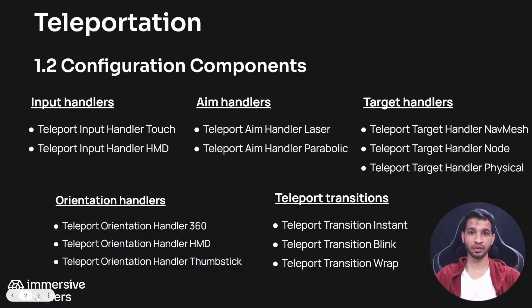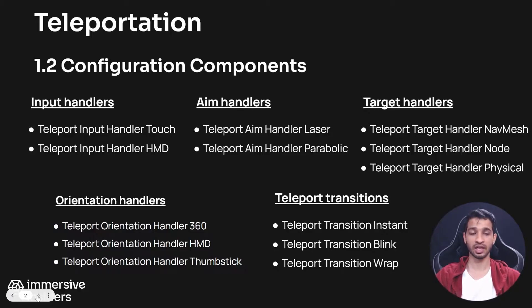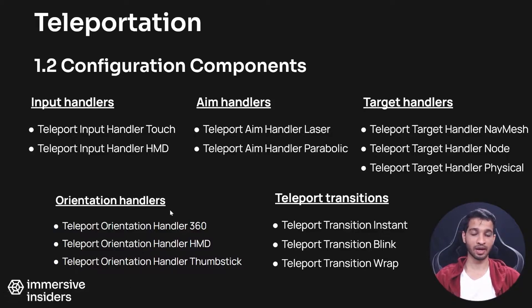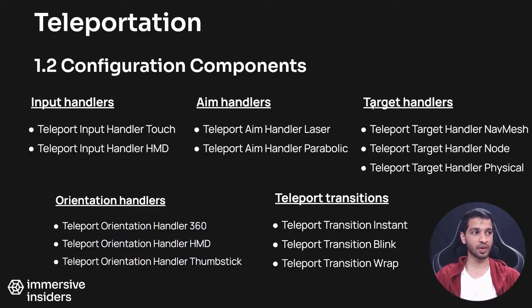Next we have configuration components across five categories. The first is Input Handlers, which determines the input source for aiming and teleportation. Teleport Input Handler Touch lets you use a touch controller, while Teleport Input Handler HMD uses the headset's volume buttons. The second category is Aim Handlers, which determines how the laser is shown — Teleport Aim Handler Laser gives a straight line, while Teleport Aim Handler Parabolic gives a parabolic arc.